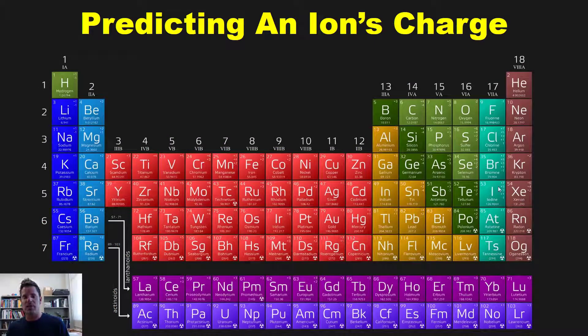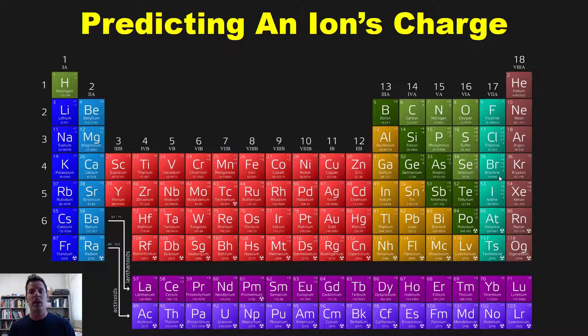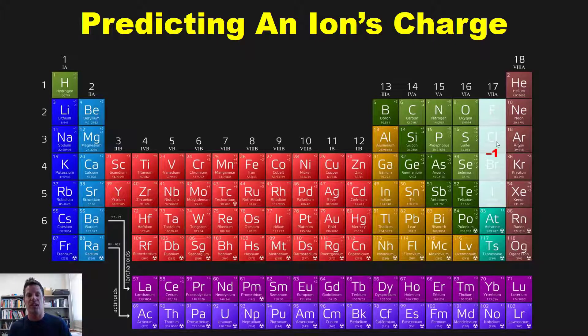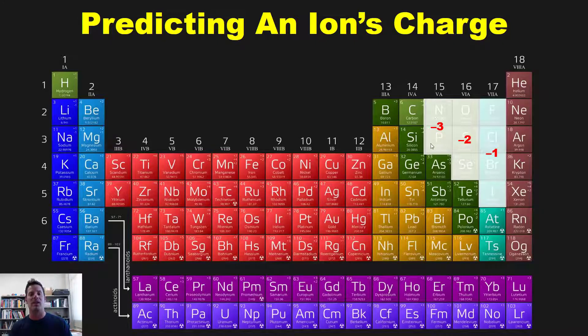For example, the elements over here in column 7A are only one column away from column 8A. This means that these elements are going to want to inherit or steal or share one electron to gain a negative 1 charge and thereby shift one column to the right in order to feel like column 8, having a full octet. By comparison, elements in column 6A are two columns away from the noble gas column. Ergo, they will try to steal or share two electrons to obtain a negative 2 charge to feel like the noble gases. By analogy, the elements over here in column 5A will want to be a negative 3 charge.